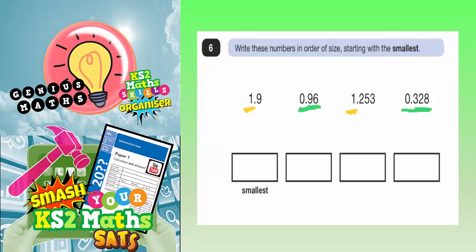First of all, let's make it a fair comparison. So to make this one have 3 digits after the point, we can just add in a 0.